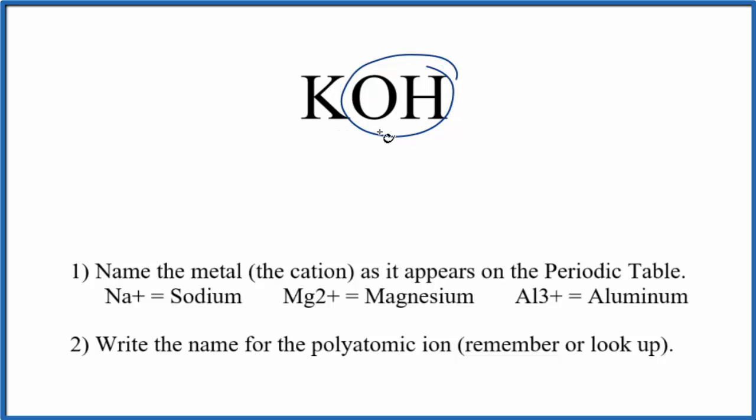So we have the hydroxide ion bonded to the metal here, potassium. So we have a metal, this polyatomic ion, which is made up of nonmetals. This is an ionic compound, and we're going to use these rules right here to write the name for KOH.